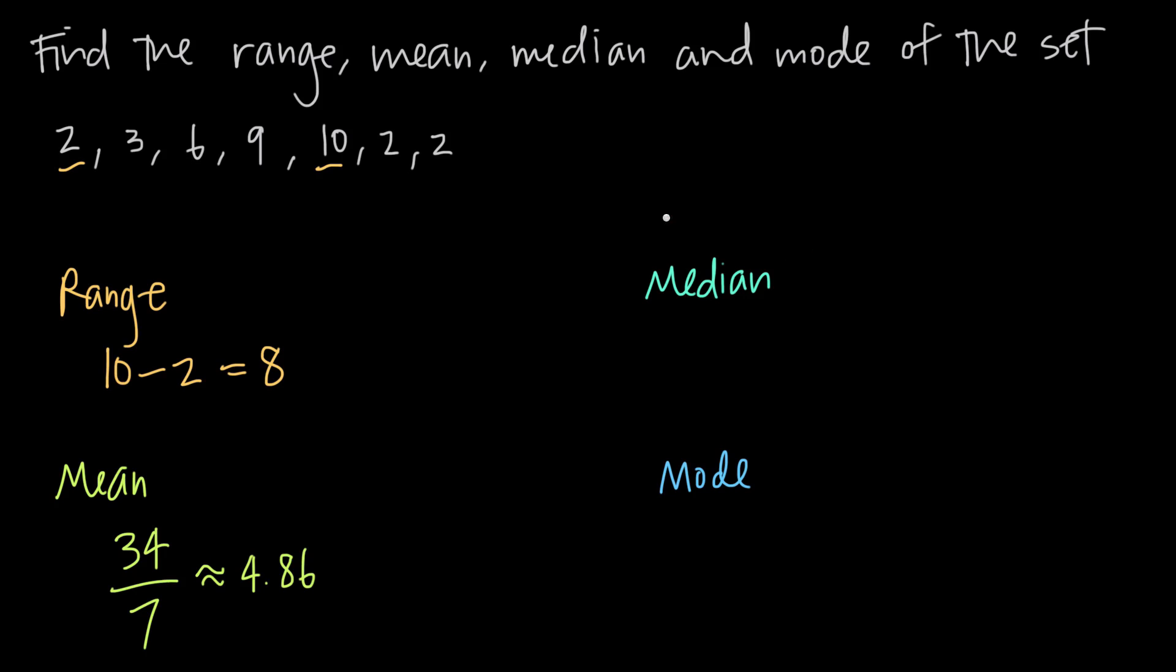Now when it comes to finding the median, if our set is not already listed in ascending order, meaning if it's not already listed from smallest to largest number, then we need to rearrange it so that it is. If we rewrite the set in order, we'll take all of the smallest numbers. Remember 2 is the smallest number and we have 3 of them, we have to write all 3 of them, so we'll get 2, 2, and 2. Then our next smallest number is 3, then 6, then 9, then 10.